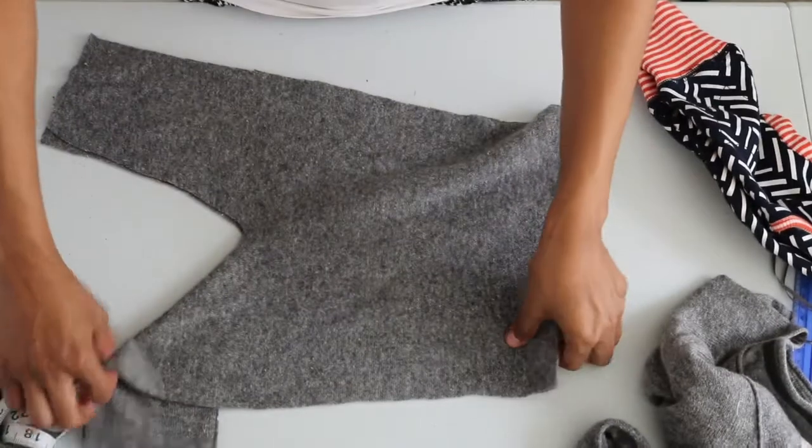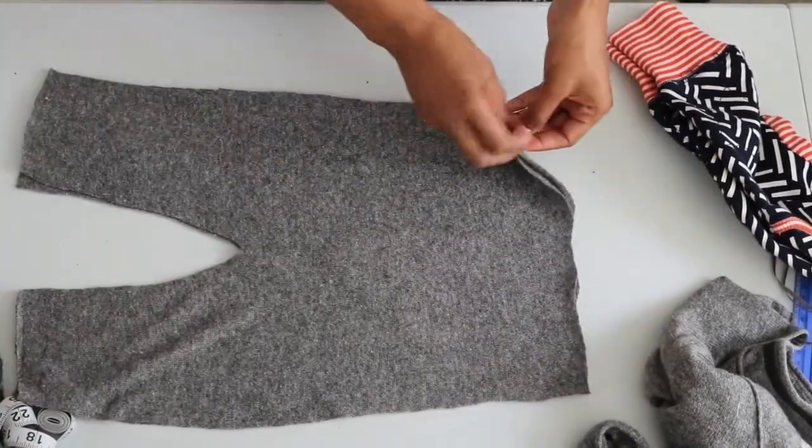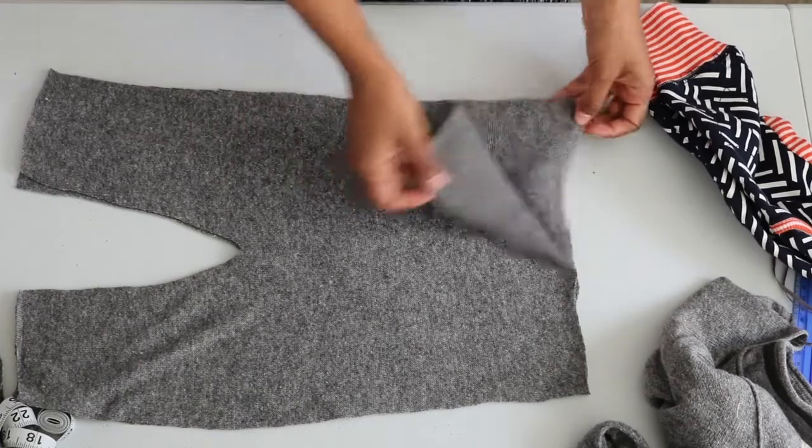Then you should end up with something like this. And because we cut on a double fold, you should have a front and a back piece.